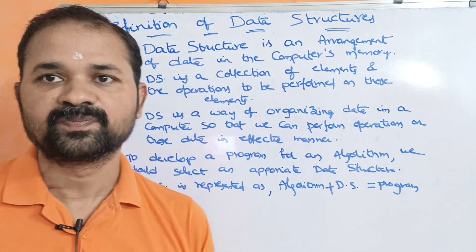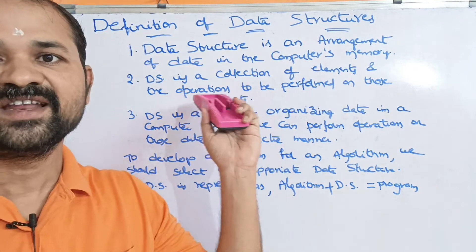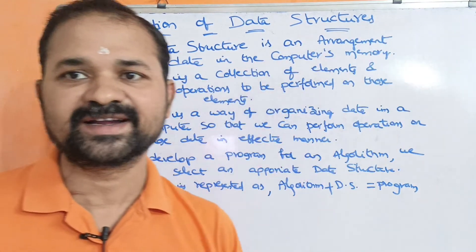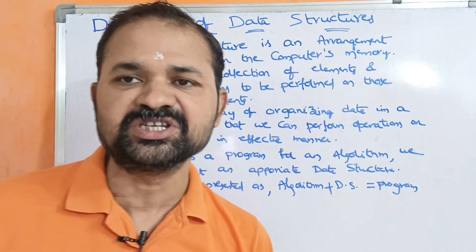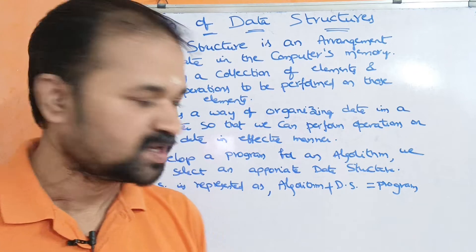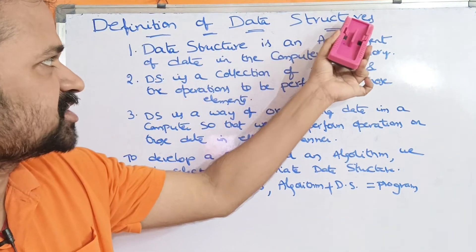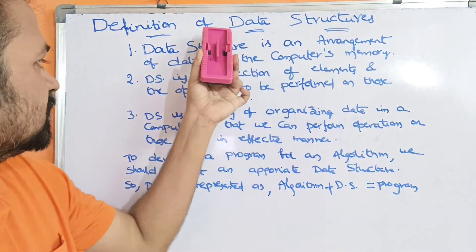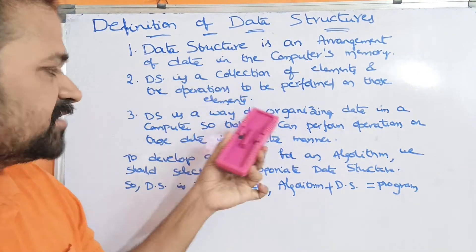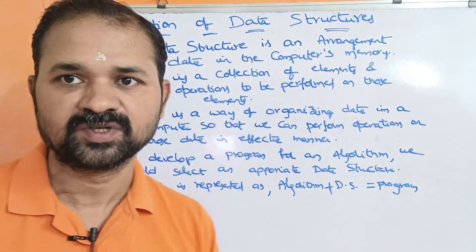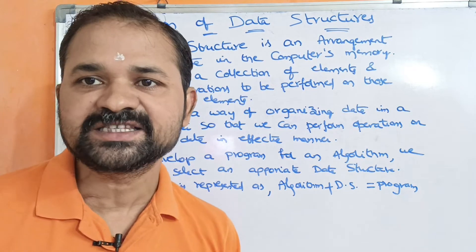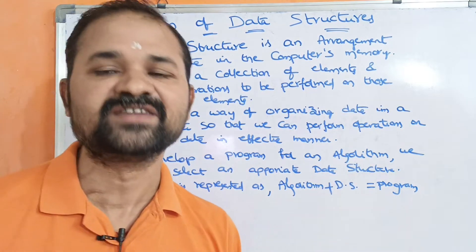We are going to define the definition of data structures. Data structures are different in three ways. Now let us see those three definitions.